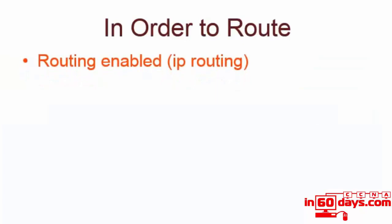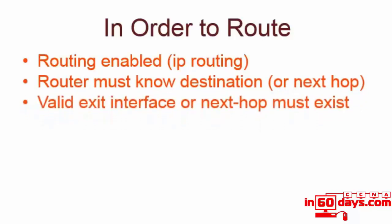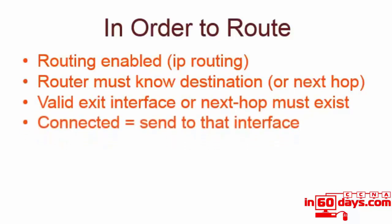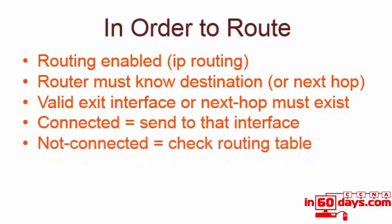In order to route, the IP routing command needs to be enabled on routers - it's enabled by default on all routers with modern versions of IOS. On layer 3 switches if you're using a routing function, you need to type the command 'IP routing' or you may spend a long time trying to troubleshoot problems. The router must obviously know the destination or the next hop address. The exit interface or next hop must actually be valid and exist. If it's connected, the packet will be sent to that interface; if it's not connected, check the routing table.